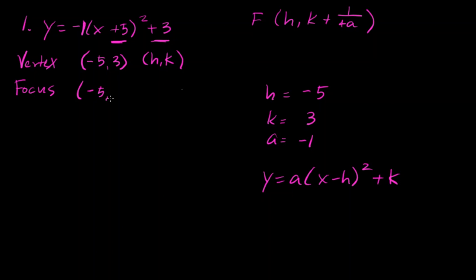Now k plus 1 over 4a is going to be, let's go ahead and substitute our numbers, 3 plus 1 over 4 times negative 1, which is 3 plus 1 over negative 4, which is 3 minus 1 fourth. Find the common denominator, that's going to be 12 over 4 minus 1 over 4, so that is 11 fourths.